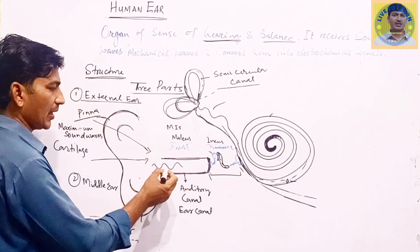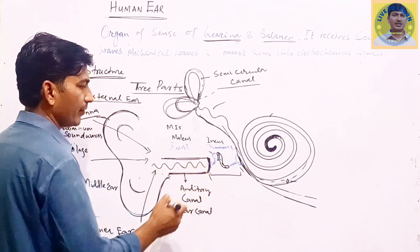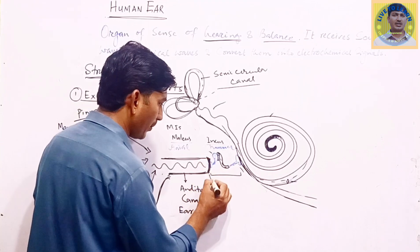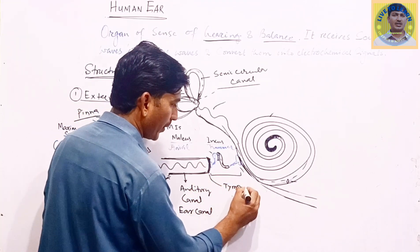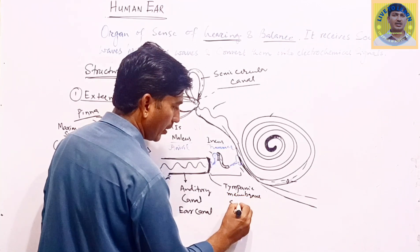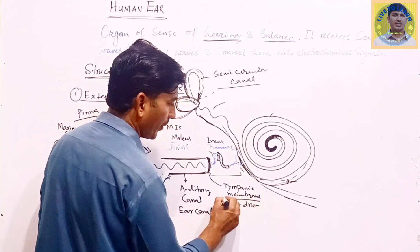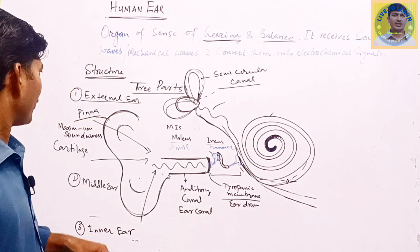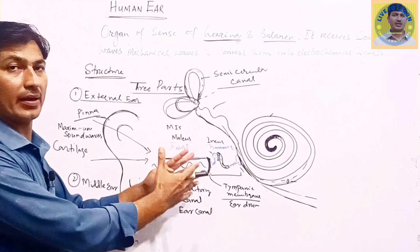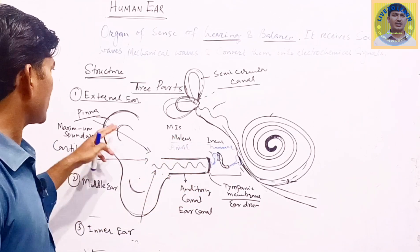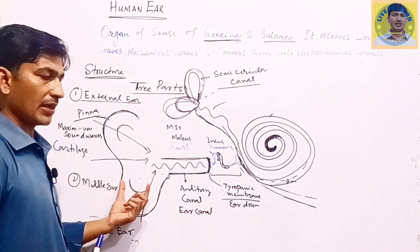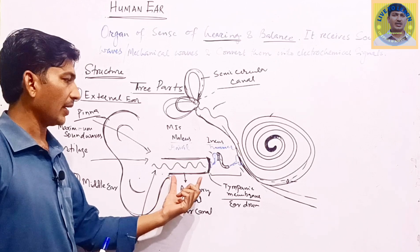The ear canal is a narrow tube which collects the sound waves. At the terminal end of this auditory canal there is a thin membrane-like structure called the tympanic membrane, also called the eardrum. This eardrum, or tympanic membrane, is at the terminal end of the external ear. So the pinna, ear canal, and eardrum are the structures that make up our external ear.